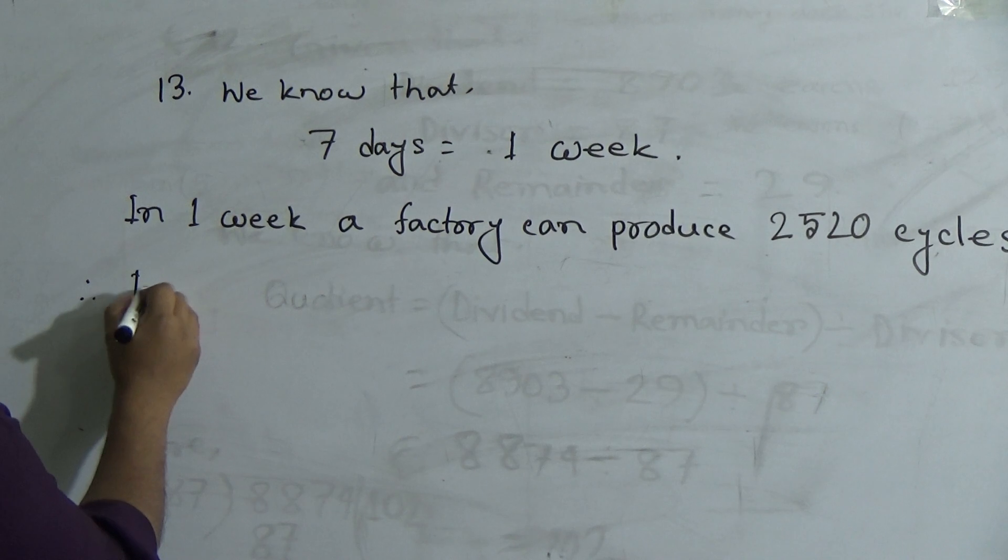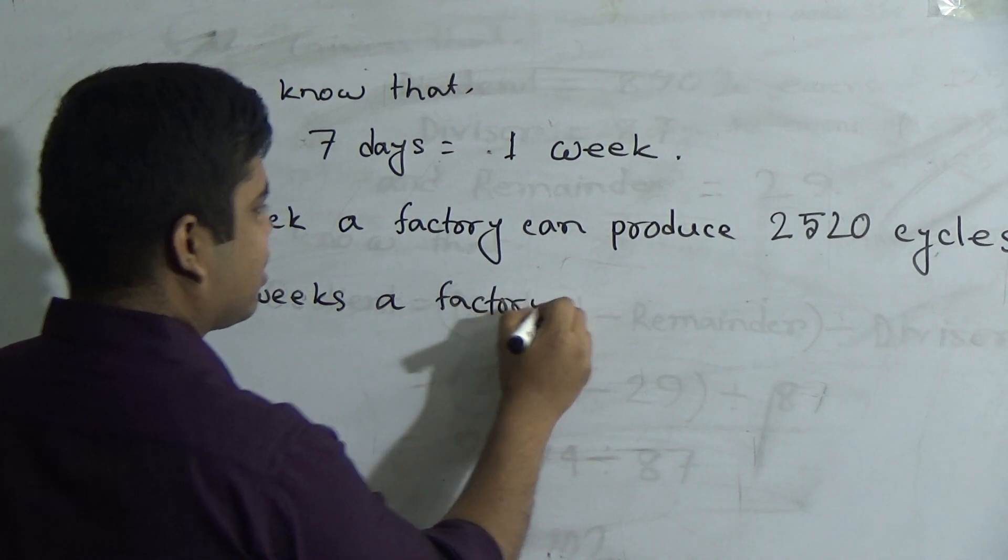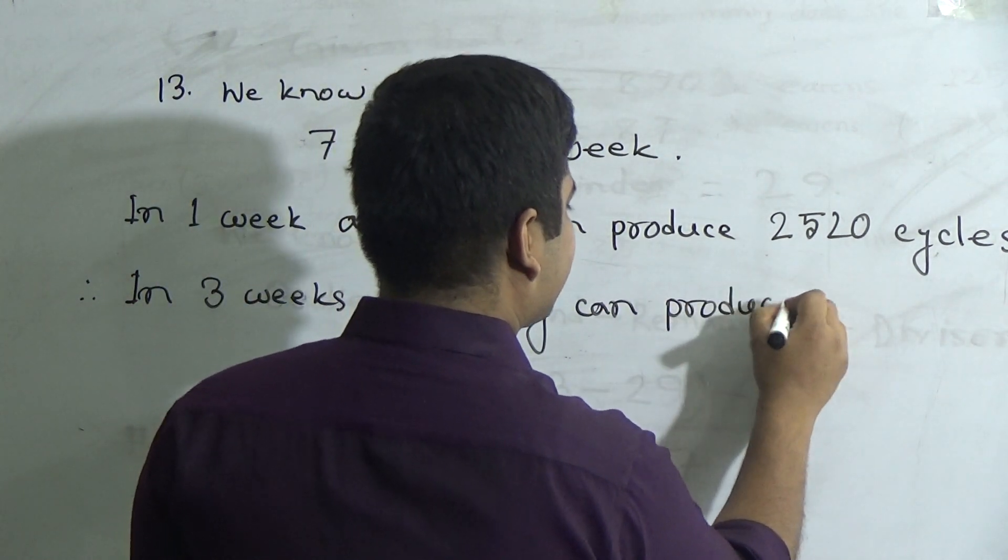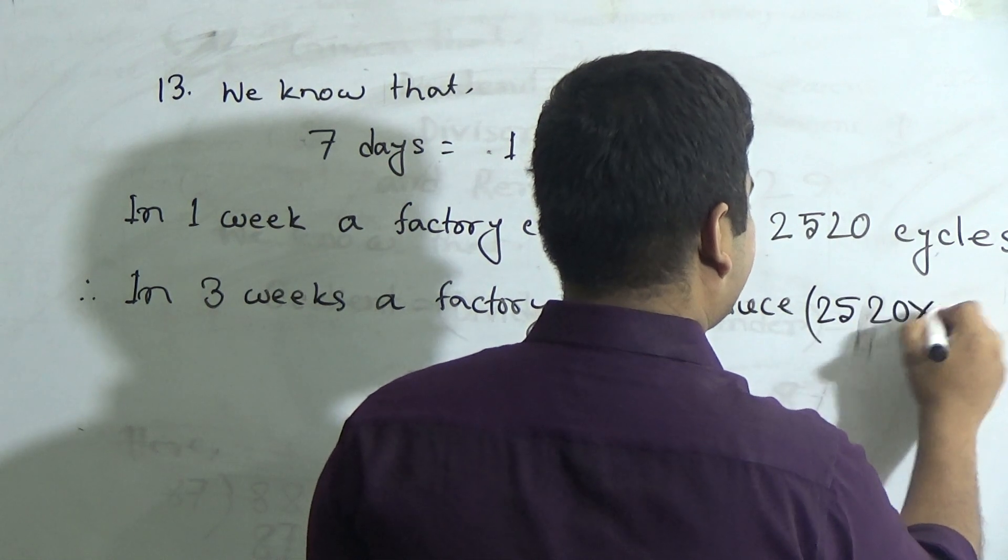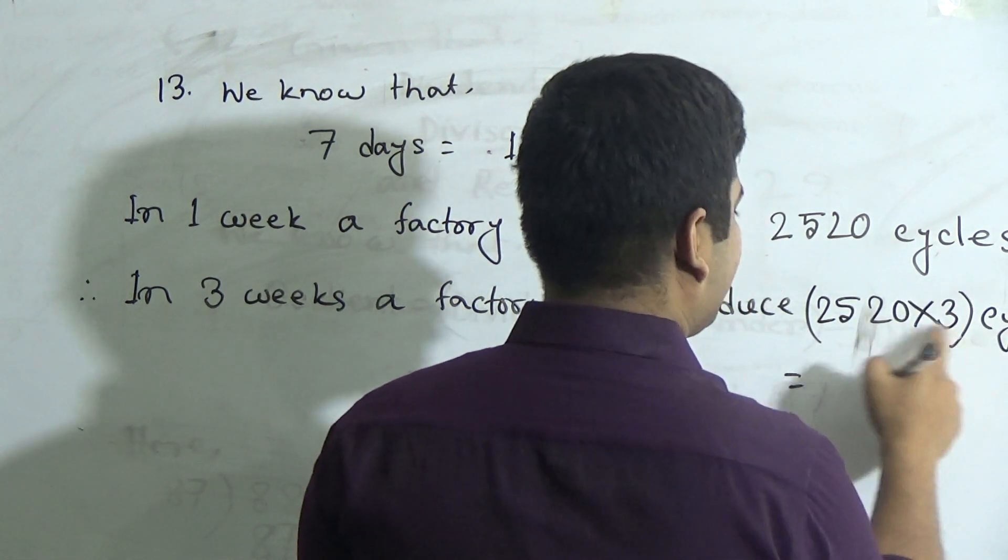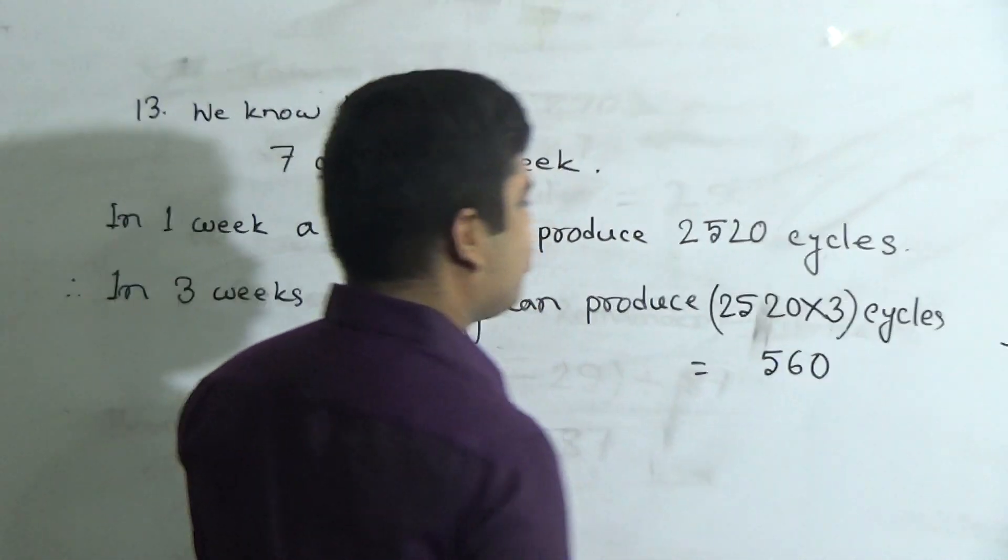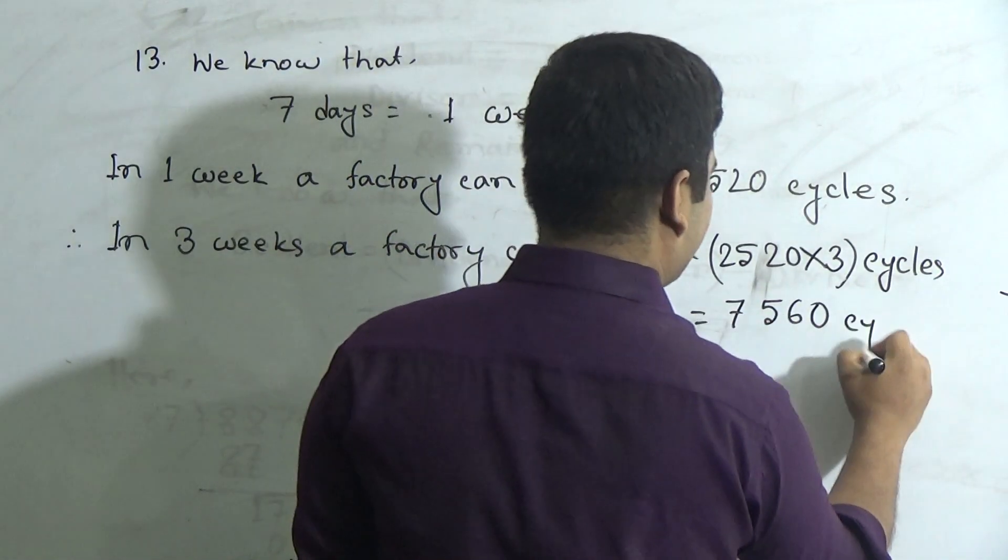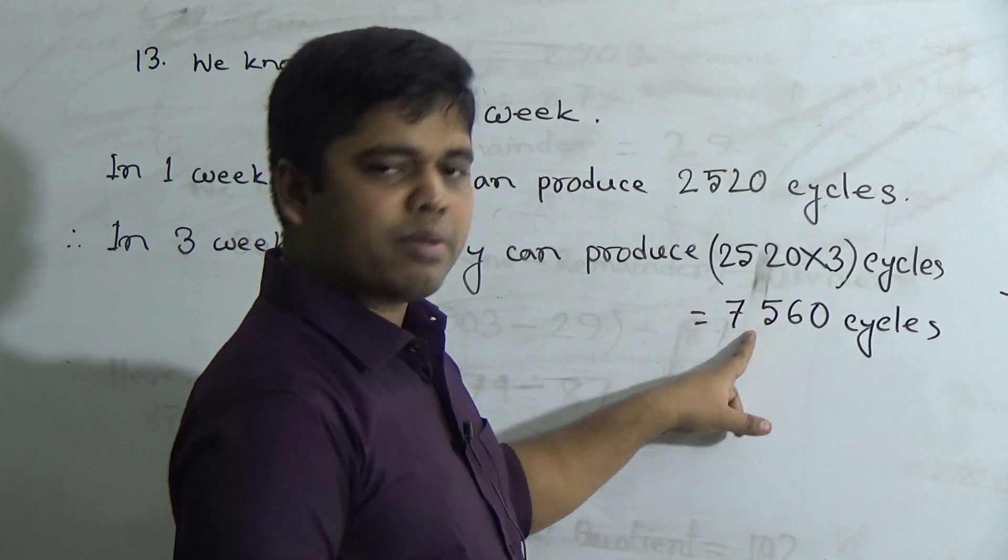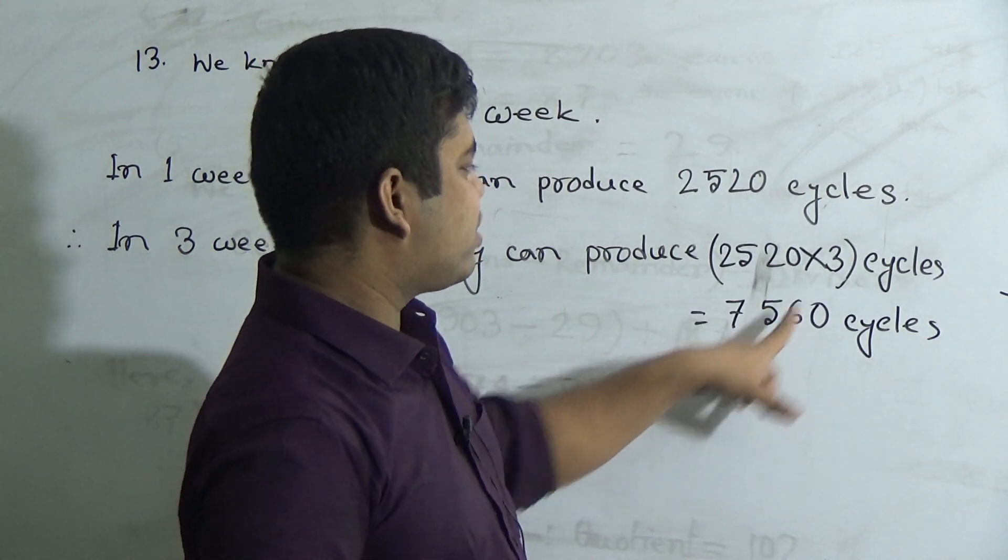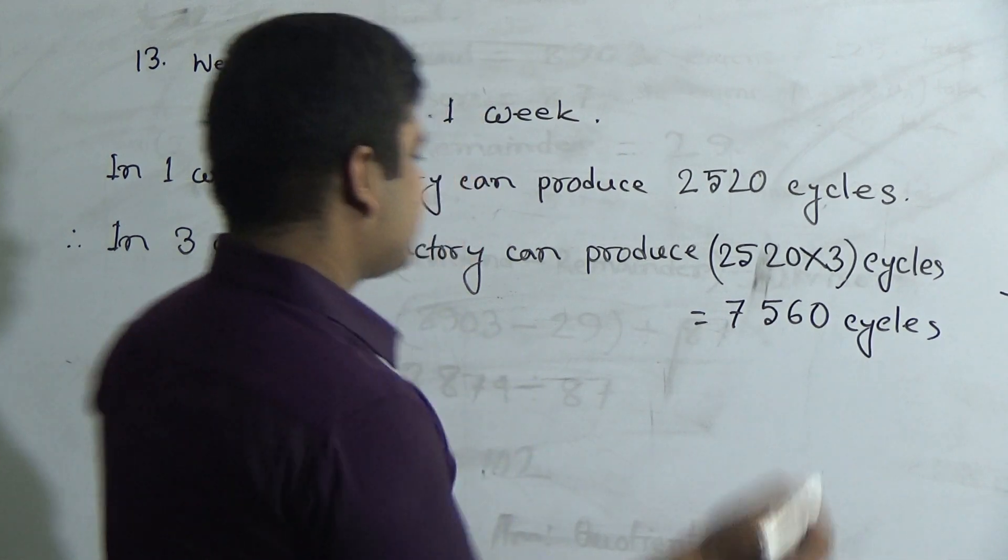Now, therefore, in 3 weeks, a factory can produce 2520 by 3 cycles. So, 3 times 0 is 0, 3 times 2 is 6, 3 times 5 is 15 carrying 1, 3 times 2 is 6, plus 1 is 7. So I repeat: 3 times 0 is 0, 3 times 2 is 6, 3 times 5 is 15. From 15, I write here 5 carrying 1, 3 times 2 is 6 plus 1 is 7. So, 7560 cycles are produced in 3 weeks. So this is the answer.